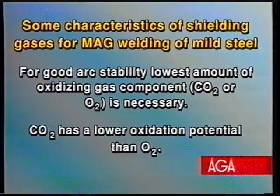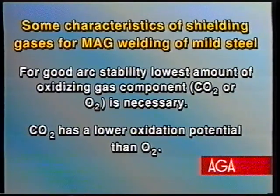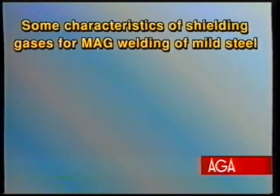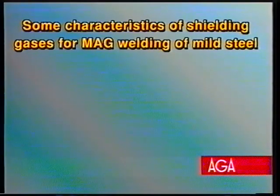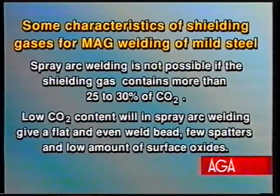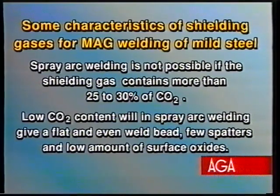Some characteristics of shielding gases for MAG welding of mild steel: for good arc stability, it is necessary to use the lowest possible amount of oxidizing gas component. Carbon dioxide has a lower oxidation potential than oxygen. More than 7-8% of oxygen gives excessive surface slag formation. Spray arc welding is not possible if the shielding gas contains more than 25-30% of carbon dioxide. A low carbon dioxide content will, in spray arc welding, give a flat and even weld bead, few spatters, and a low amount of surface oxides.